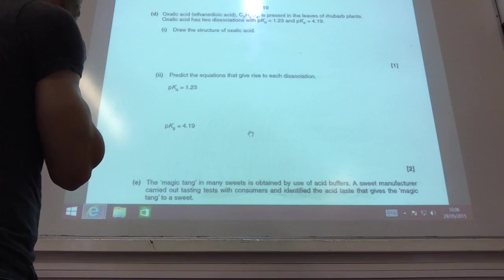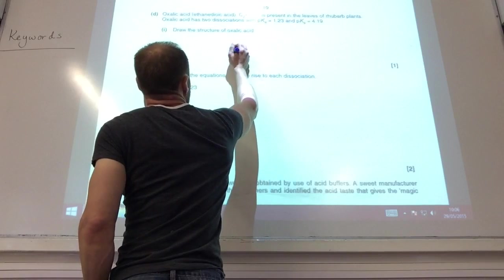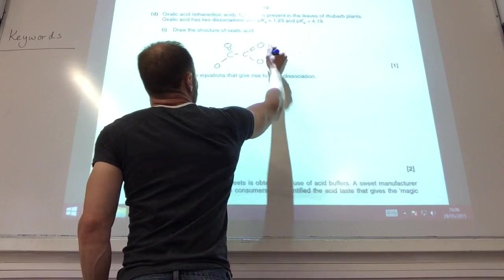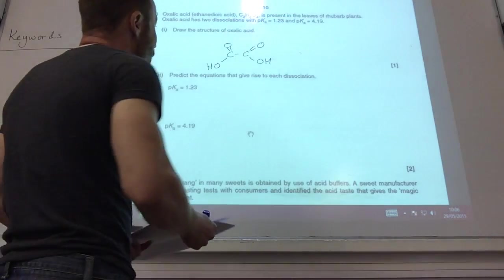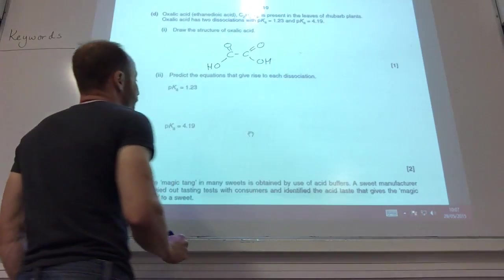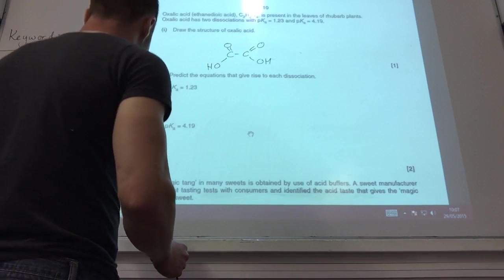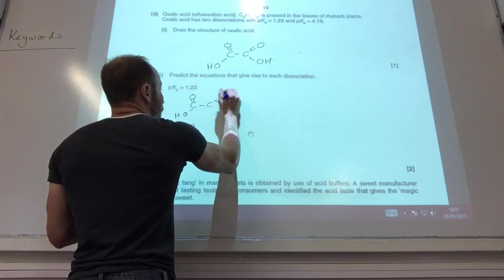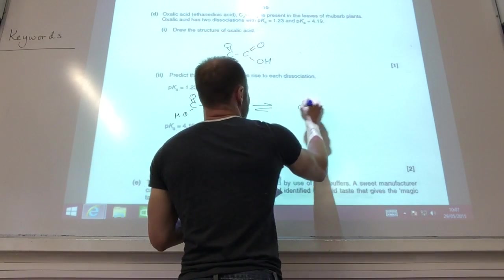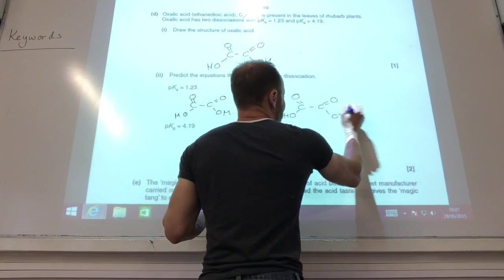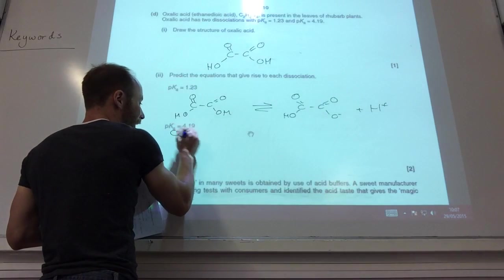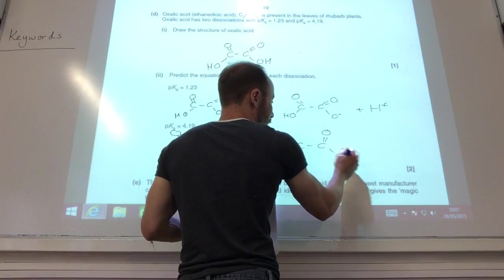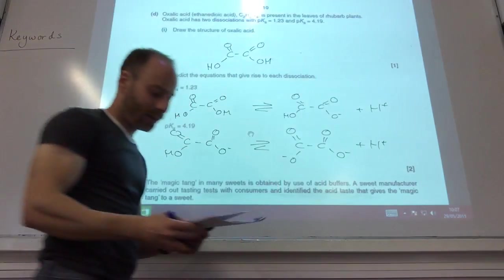They now want me to draw the structure of oxalic acid. It's got two carbons, four oxygens, like so, and two hydrogens, so it's got a little bit like that. That means I've got two hydrogen ions that can be donated. The first one that's going to give me the first dissociation is going to be, you can draw it out, like so, dissociating to just one hydrogen ion plus H+. The next one is going to be taking that boy there, and he dissociates again to give me the other H+, like so.